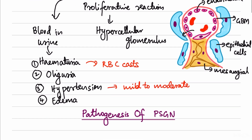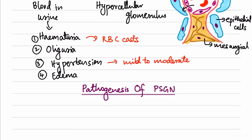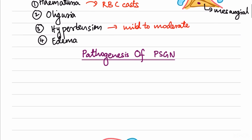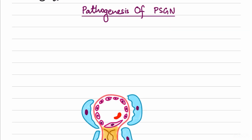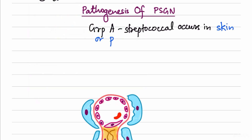Now we move to the pathogenesis of post-streptococcal glomerulonephritis. Initially, a group A streptococcal infection occurs in either the skin or the pharynx. Not all strains lead to PSGN — the most prominently involved strains are type 12, type 4, and type 1, which are most commonly involved in the pathogenesis.